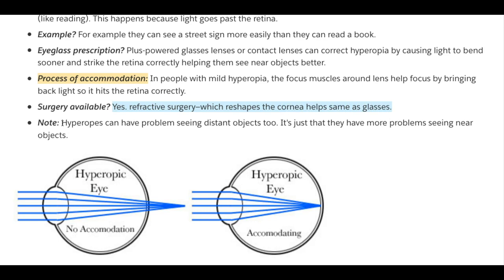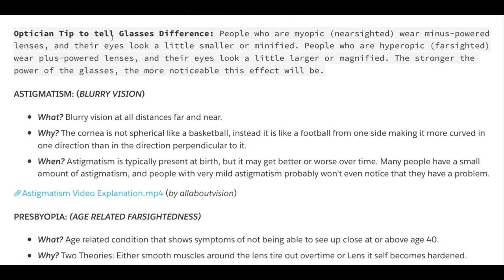It's important to note that, just like myopes, hyperopes can also have problems seeing both distant and near objects — it's just that they have more problems seeing near objects. An optician tip to tell the difference between nearsighted and farsighted people: people who are myopic wear minus-powered lenses and their eyes look a little smaller or minified. The stronger the power of the glasses, the more noticeable this difference is.